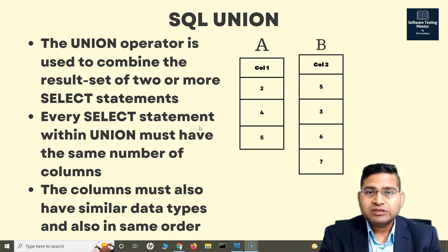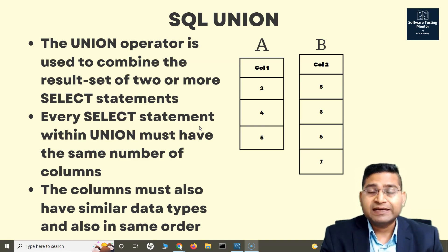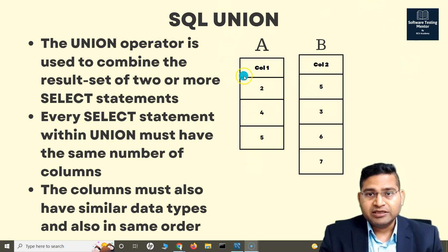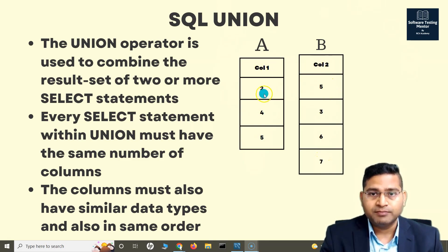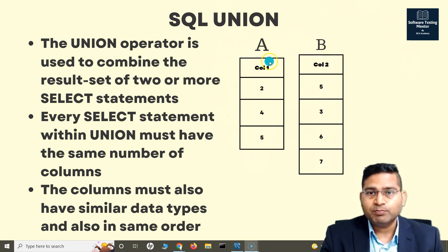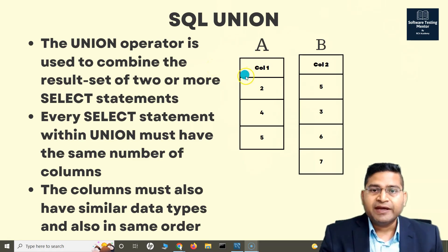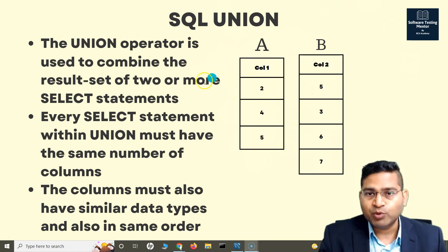The UNION operator will basically get you the combined results of those SELECT statements. Say for example, I have table A and table B — very simple tables. In table A there are some values, just one column in this table. The other table also has only one column, and these are all integer values in these columns.